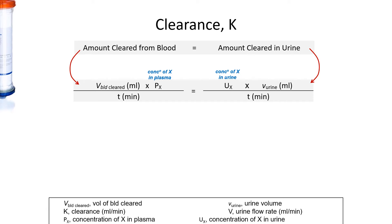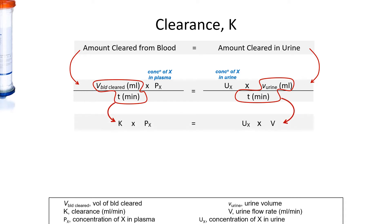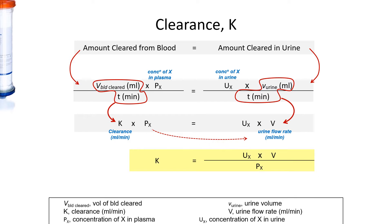And on both sides of the equation, we divide it by time. The volume of blood cleared per unit time is K, clearance. And the volume of urine per unit time is defined as the urine flow rate. So if we re-express it, K will be equals to the concentration of X in urine multiplied by the urine flow rate, divided by the plasma concentration P. So usually we use urea as the marker, and so the clearance of urea will give us this formula: U times V over P.